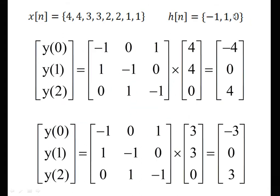In the first convolution, we circularly arrange h of n. Taking the first input 4, 4, 0, we get the output minus 4, 0, 4. In the next case, with the same h of n and the next sequence 3, 3, 0, we get the output minus 3, 0, 3. Similarly for inputs 2, 2, 0 and 1, 1, 0, we compute their respective outputs.